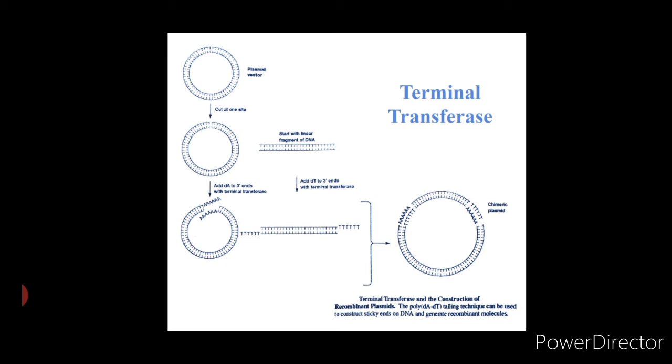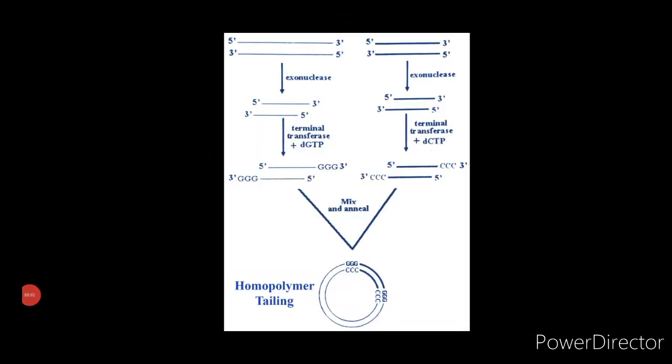Now let us understand the concept of homopolymer tailing. Terminal transferase purified from calf thymus provides the means by which the homopolymeric extension can be synthesized by adding nucleotides to the 3' OH terminus of a population of DNA molecules. DNA with exposed 3' OH groups — such as those arising from pre-treatment with lambda phage exonuclease or restriction with an enzyme such as PST1 — is a very good substrate for transferase.